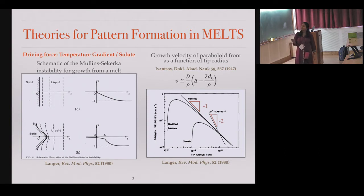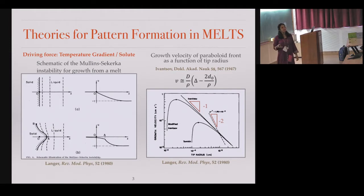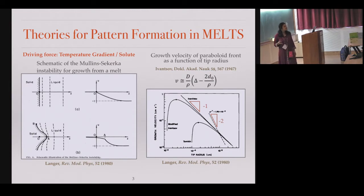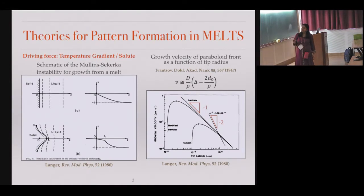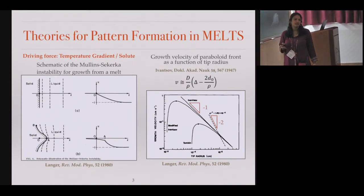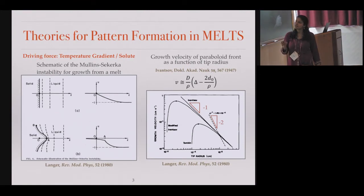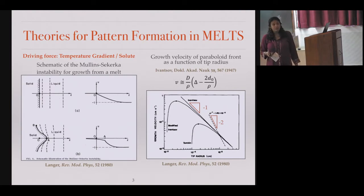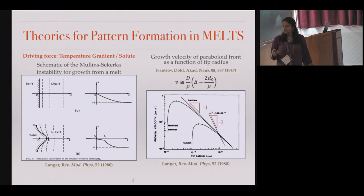If you think about how this instability is quantified, typically one would plot the growth velocity versus tip radius. In some cases you expect this to go as an inverse rule, and in some cases the velocity would decrease with tip radius to a power of minus two. There is a lot of literature by Langer and others on this.